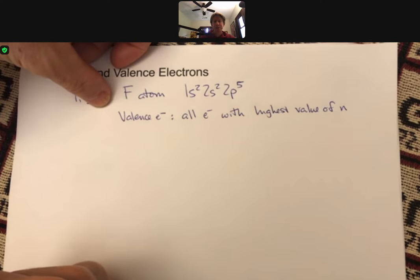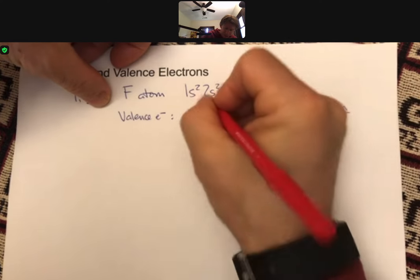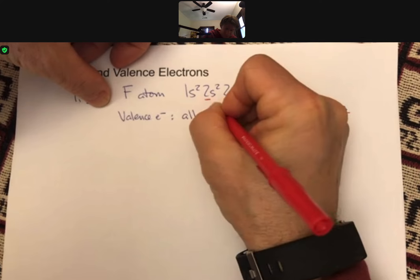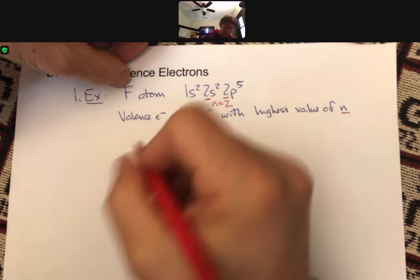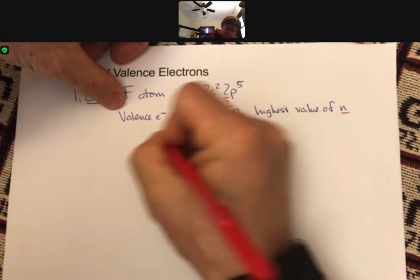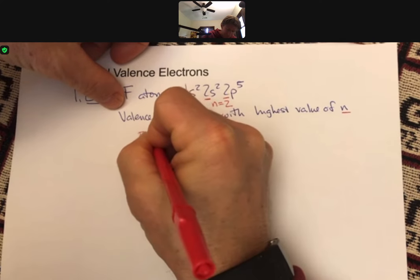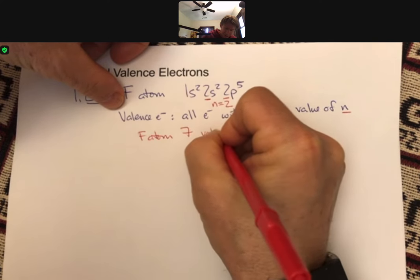Where n is the principal energy level, and here we have n equals 2 is the highest value of the principal energy level. And so a fluorine atom has seven valence electrons.